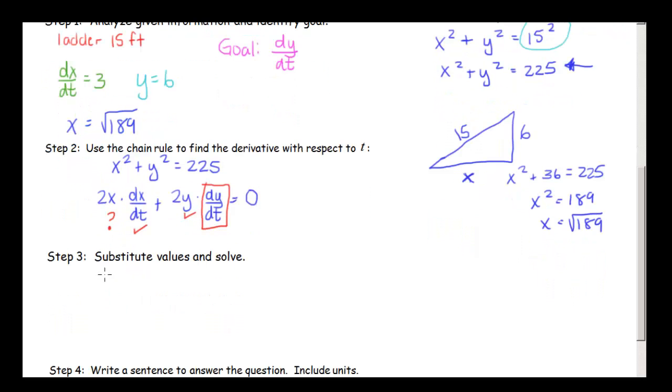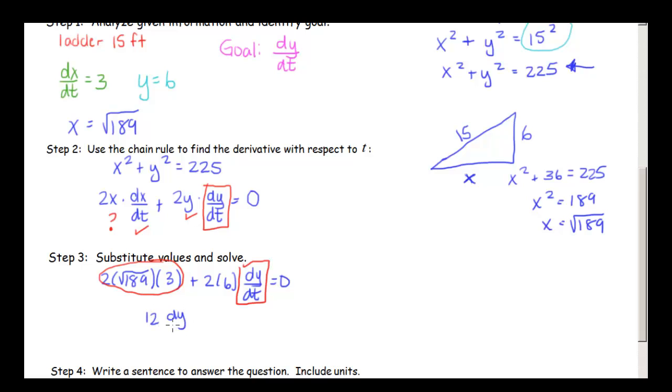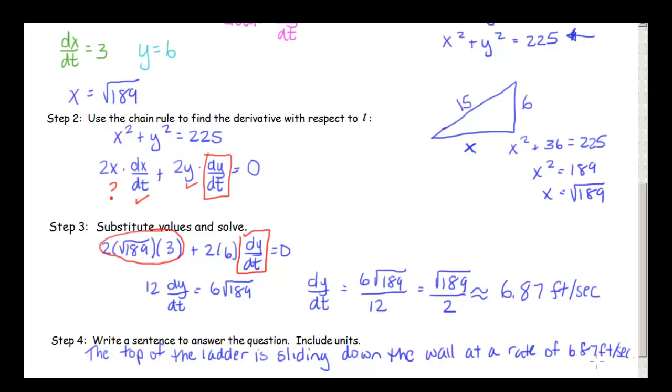Now we can just substitute in all our values. So we have 2 times the square root of 189 times dx dt, which is 3, plus 2 times y, that's 6, times dy dt equals 0. This is what I'm trying to solve for, this dy dt. So I'm going to move this part here over on the other side. So I have 12 dy dt equals 6 times the square root of 189. So dy dt is going to be 6 square root of 189 divided by 12, which is the square root of 189 divided by 2. It would be helpful to know what this is as a decimal. And it's 6.87 and the units here are in feet. So the top of the ladder is sliding down the wall at a rate of 6.87 feet per second.